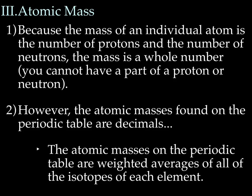Let's talk about atomic mass. Because the mass of an individual atom is the number of protons plus the number of neutrons, the mass must be a whole number, right? You cannot have part of a proton or part of a neutron. Being that a neutron weighs 1 AMU, 1 neutron and its mass are the same. So if you have 1 neutron, 1 proton, you're going to have an atom with a mass of 2 AMU. You can't have 1 proton and a half a neutron. It's just not possible.